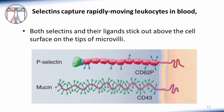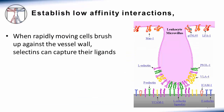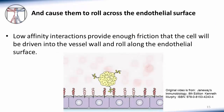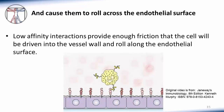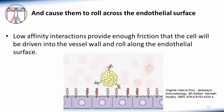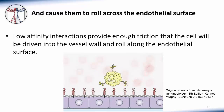The way selectins function is straightforward. Both selectins and their ligands stick out above the cell surface on the tips of microvilli. If a rapidly moving cell brushes up against the vessel wall, selectins form contacts with their ligands. Even a low-affinity interaction will provide enough friction that the cell will be driven into the vessel wall and roll along the endothelial surface.